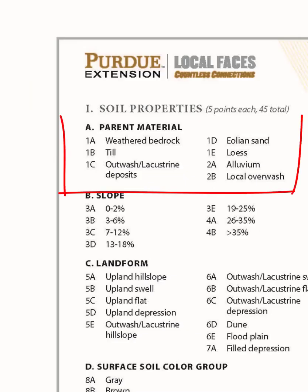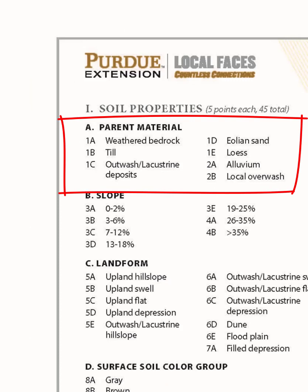Section A, Parent Material. The first parent material listed is Weathered Bedrock. You may see this parent material if you're judging at a contest held in the southern one-third of the state of Indiana. It will be made up of angular rocks and stones that are sedimentary — these may be limestone, sandstone, shale, or some other sedimentary rock. It will be a root growth limiting layer. The appearance of weathered bedrock in the soil pit has been described as looking like a number of books haphazardly stacked beside and on top of each other at some depth in the horizon.